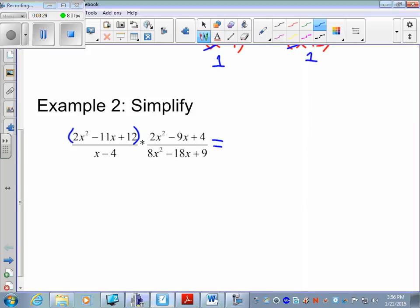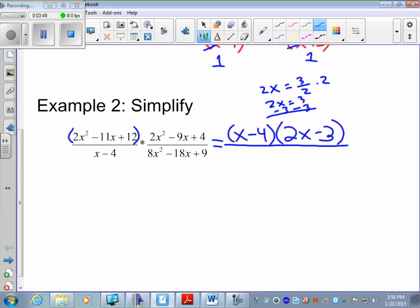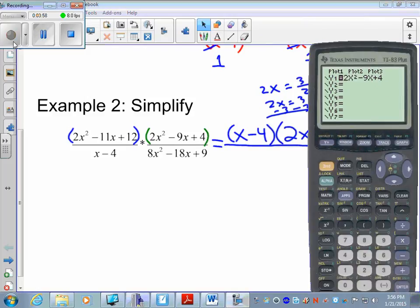We have 4 and 3 halves. For 4, you have x minus 4. For 3 halves, x equals 3 halves multiplied by 2 subtract 3 gives 2x minus 3 as a factor. Now we have to do this again for the second numerator, put it in the calculator.